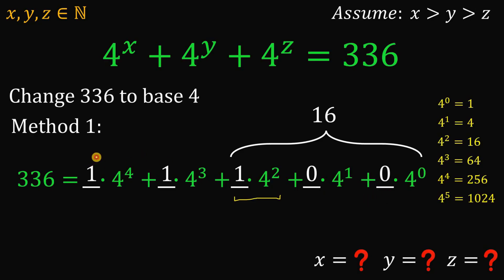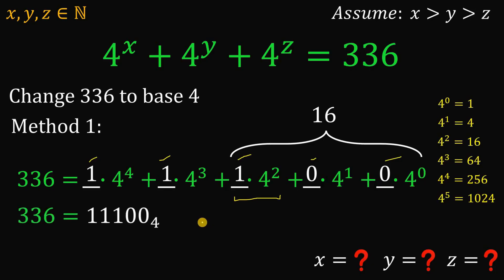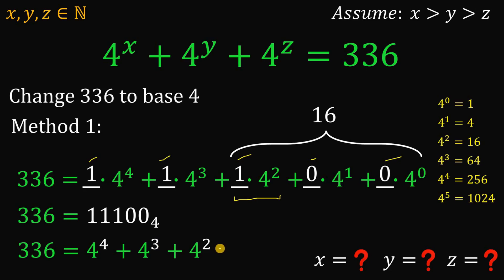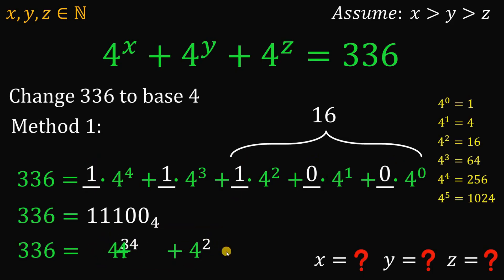From here, let's look at the digits: 1, 1, 1, 0, 0 — that's exactly the base 4 representation of 336. In short, 336 can be written as 4 raised to the fourth power plus 4 raised to the third power plus 4 raised to the second power. Therefore, x equals 4, y equals 3, and z equals 2. And technically speaking, we can rearrange this and still the sum is just 336. So the general solution is the permutation of 4, 3, and 2.